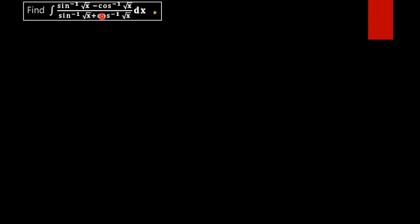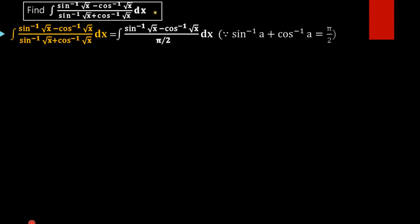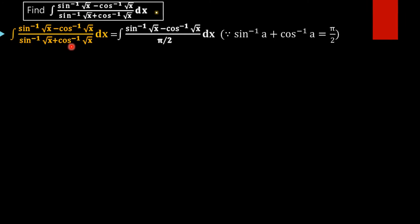In order to find the value of this integral, consider a property of inverse functions: sin inverse a plus cos inverse a equals pi by 2. Using this property, we rewrite the denominator as pi by 2.